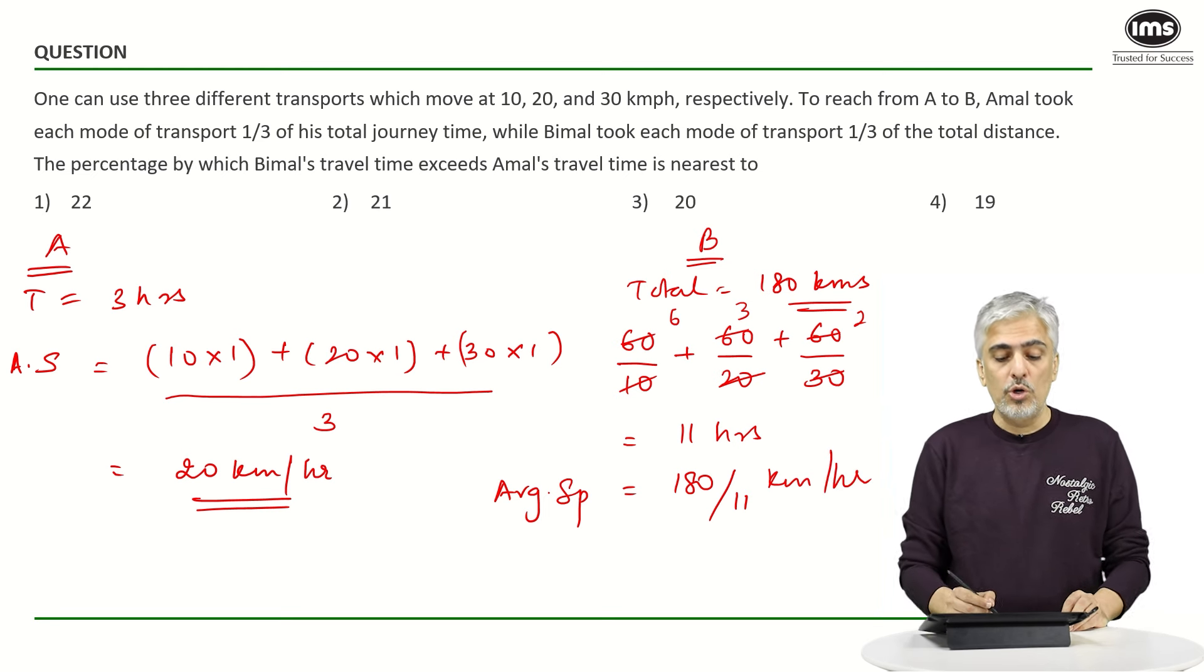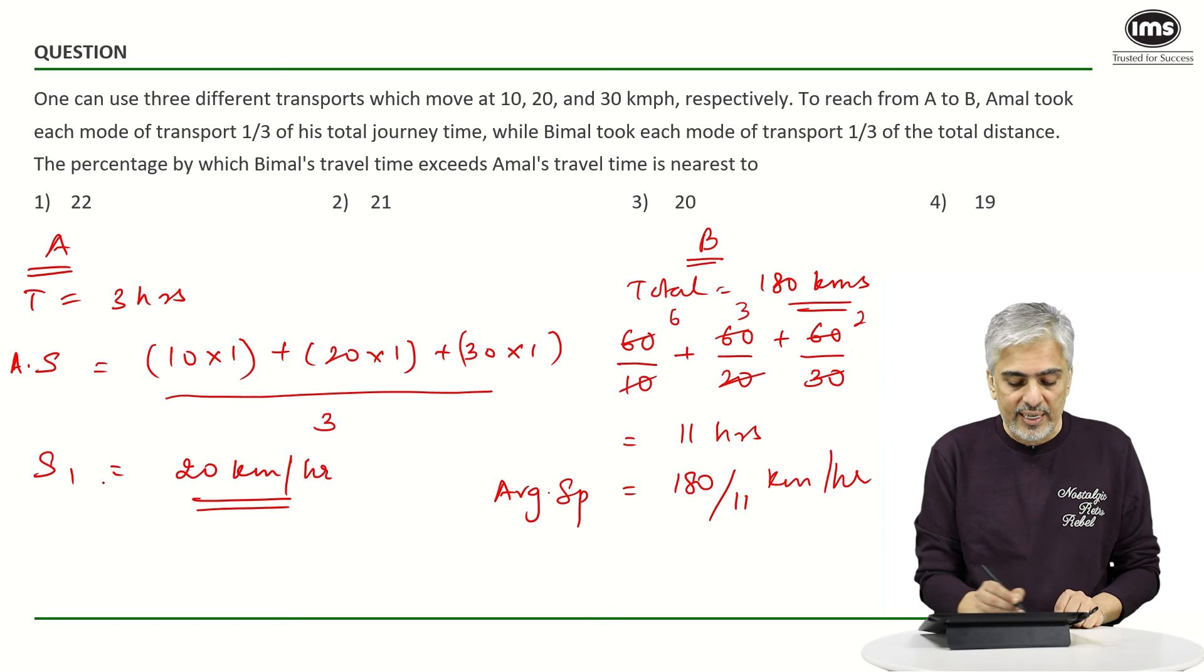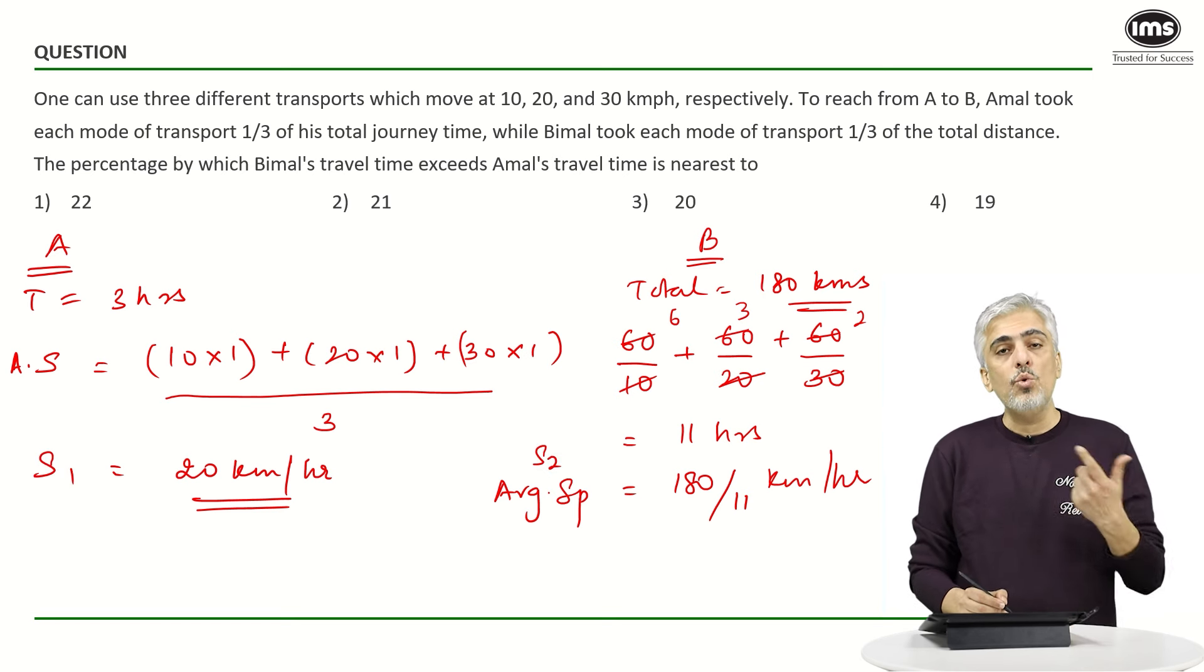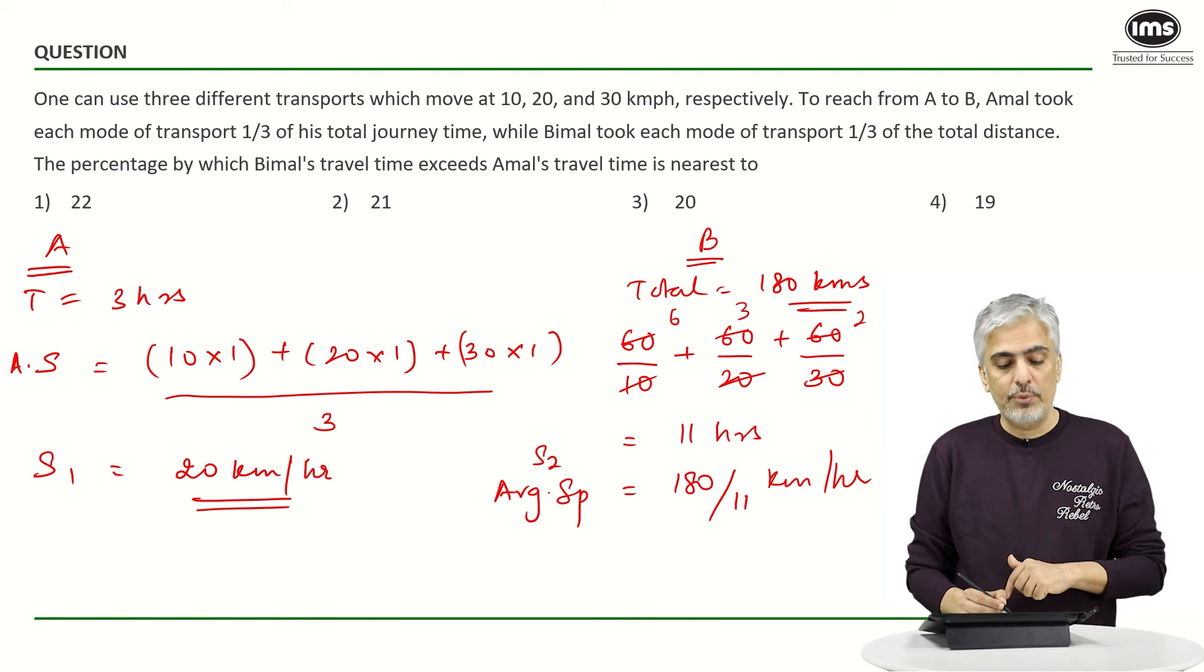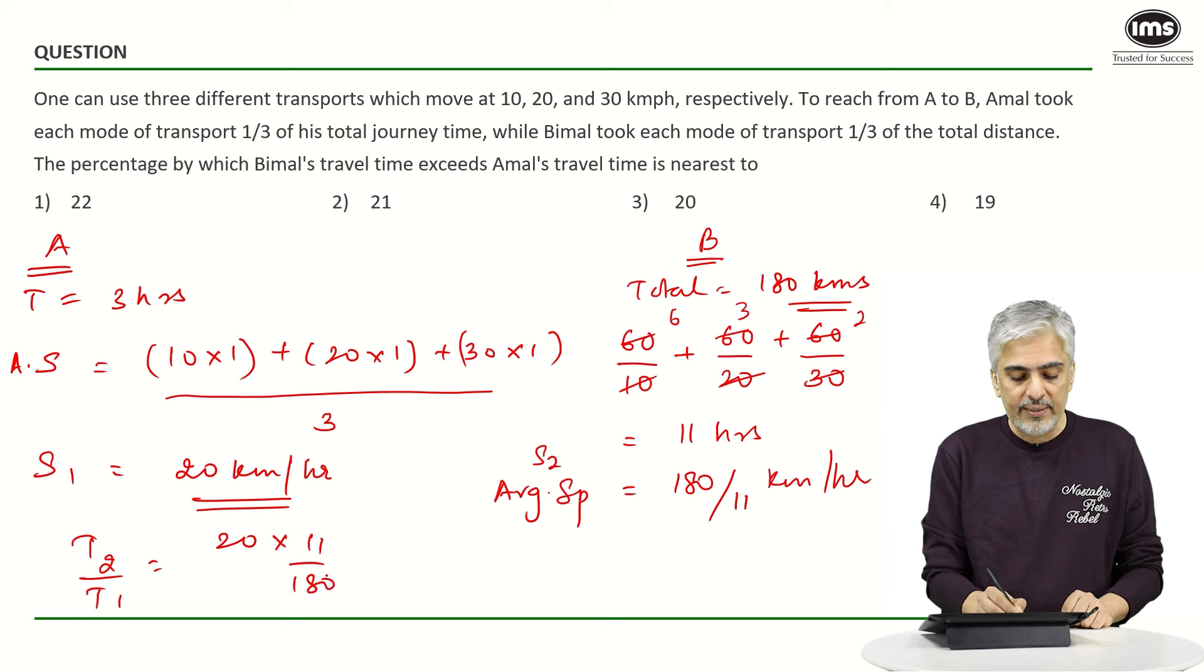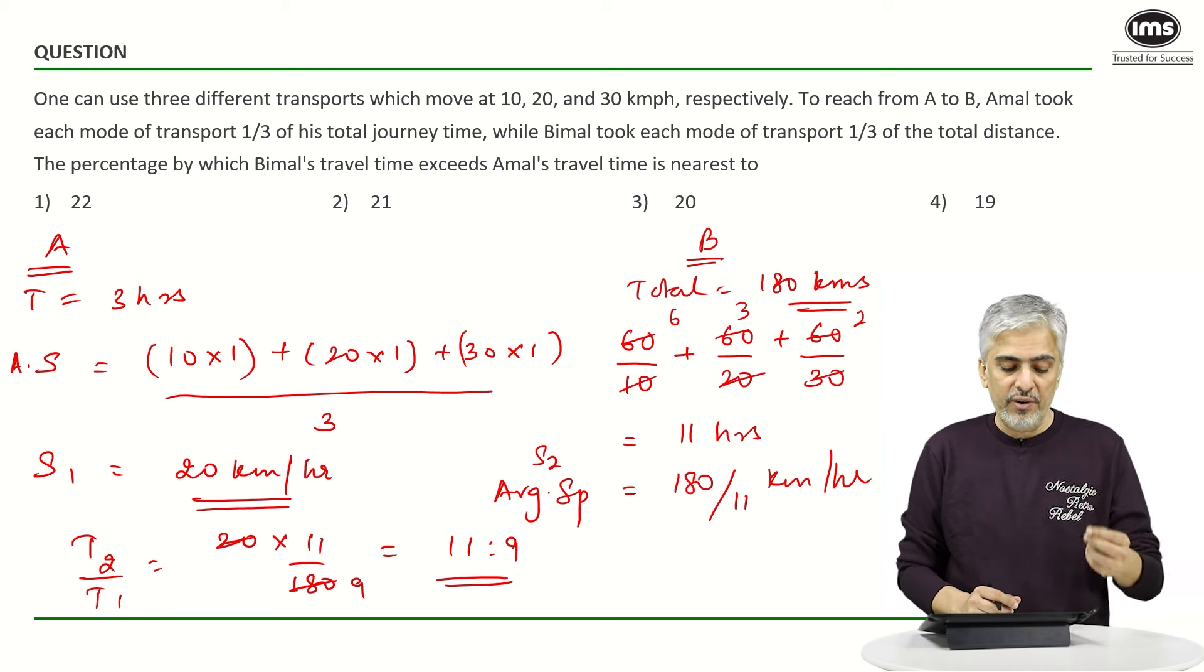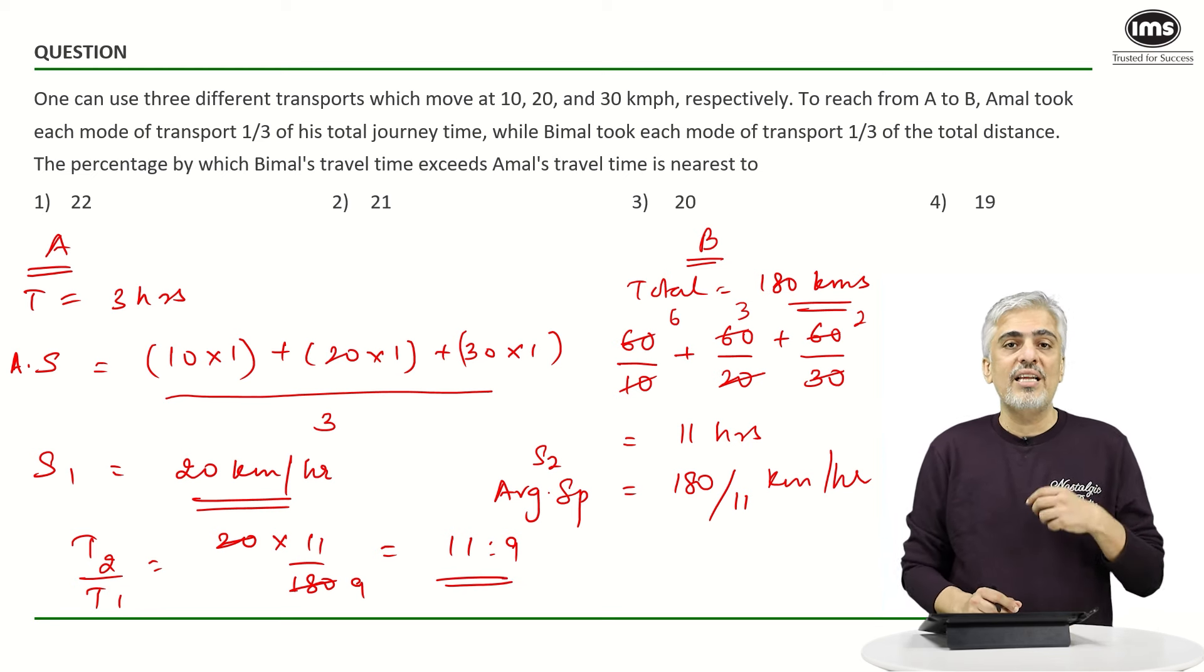read the question we want to know time difference. So this is if I call this as S1 and this as S2. So T2 upon T1 will be S1 upon S2 because we want to know Bimal's travel time is extra by how much. So T2 upon T1 will be S1 upon S2 which will be 20 upon 180 upon 11 that is 20 into 11 upon 180. So that is 11 ratio 9. So in short if Amal took 9 hours then Bimal took 11 hours for the same journey. So 2 hours extra.